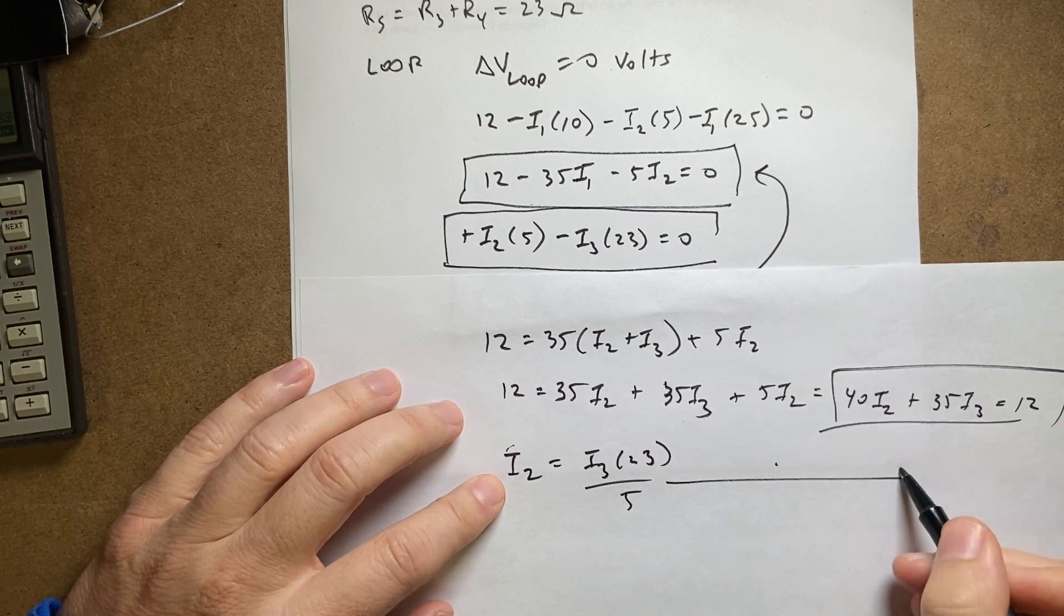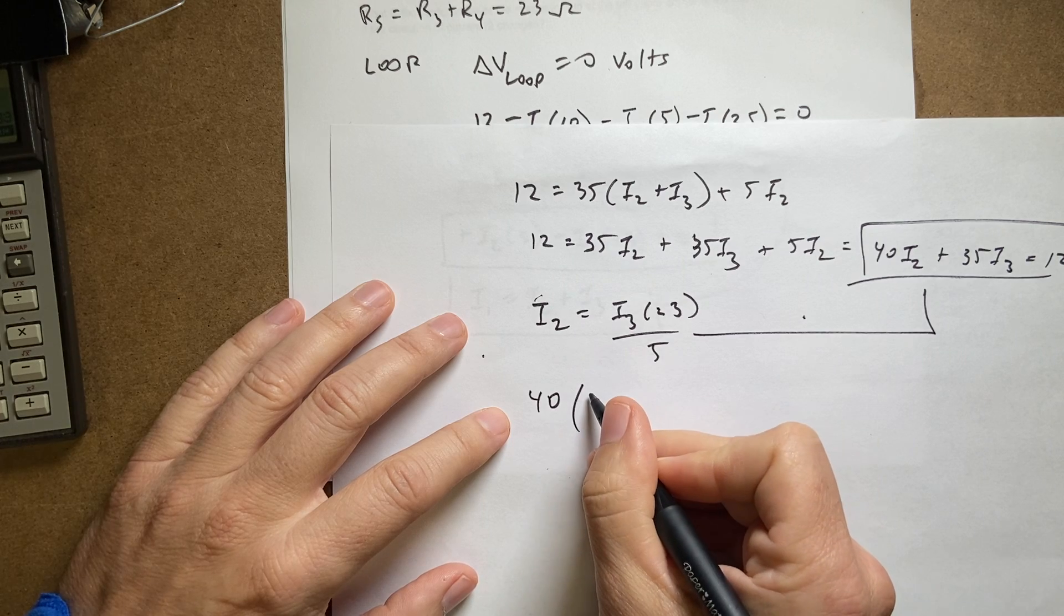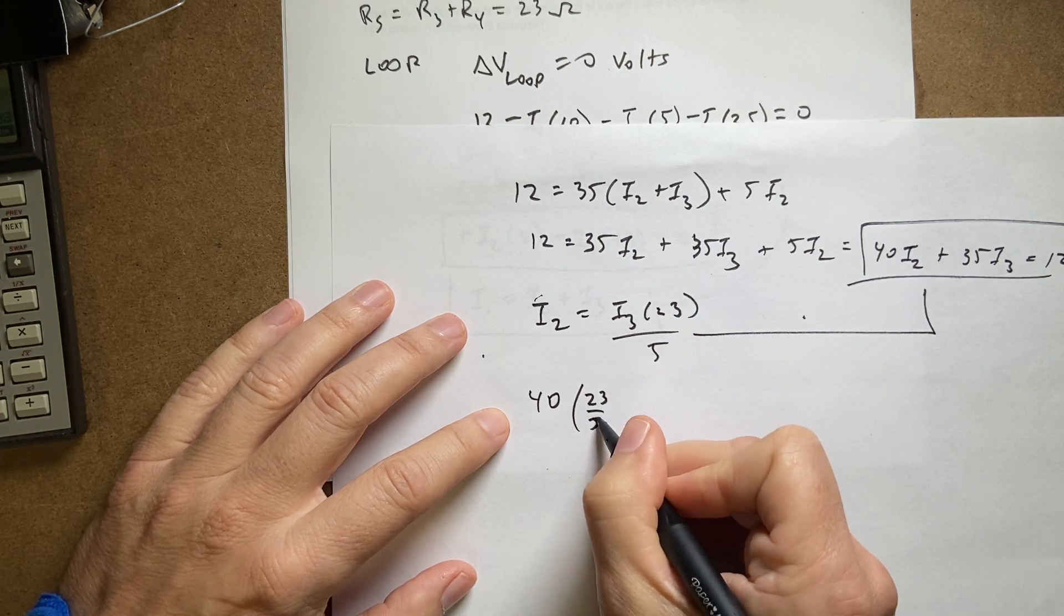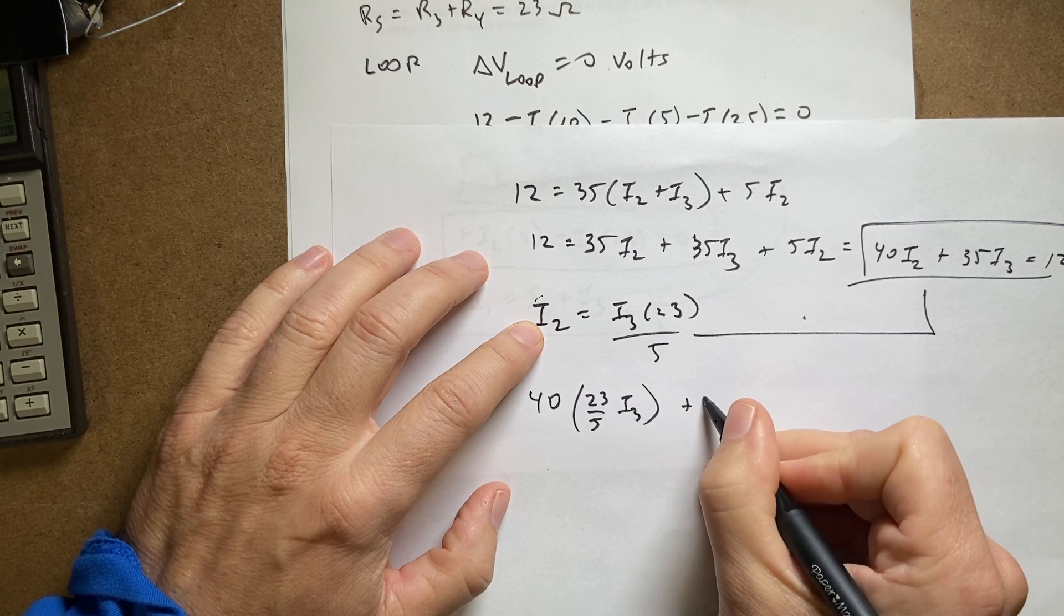Now I can substitute that in up here, and I get 40 times 23 divided by 5 i3 plus 35 i3 equals 12.